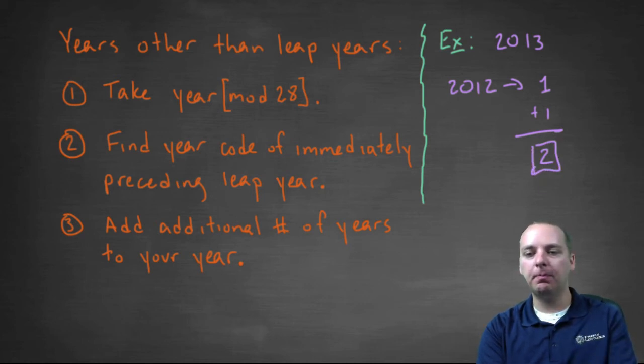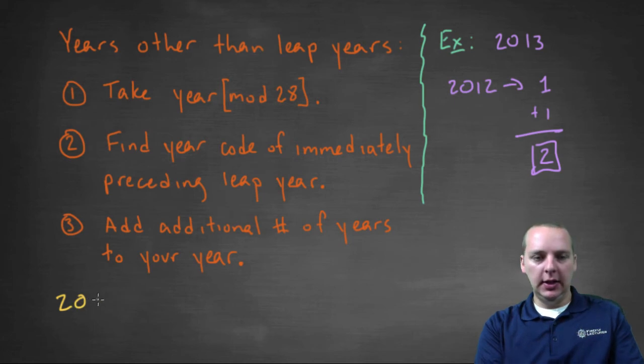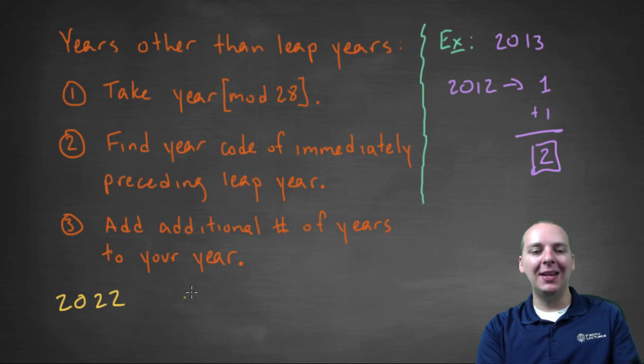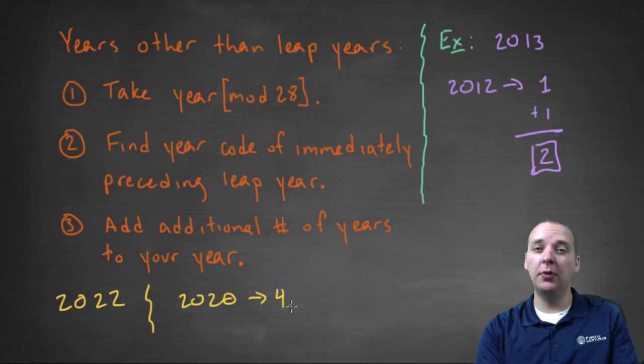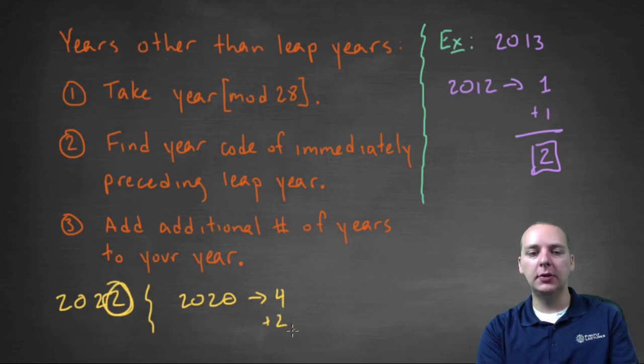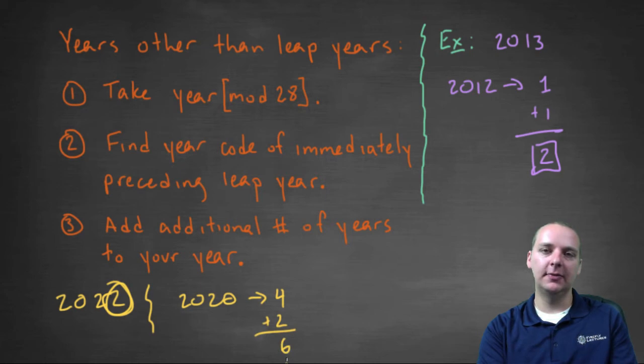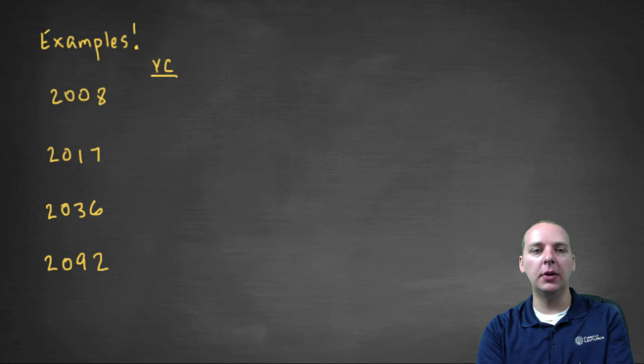Let's do one more. What if you're trying to find, let's say two thousand twenty-two, two thousand twenty-two? Well, the immediately preceding leap year would be two thousand and twenty, whose year code was four. If you remember, that's the one where you add up the digits and you get four. This is two years after that. So plus two. And you would get a six. Right? So that's it. That's what you do for all the years other than leap years.